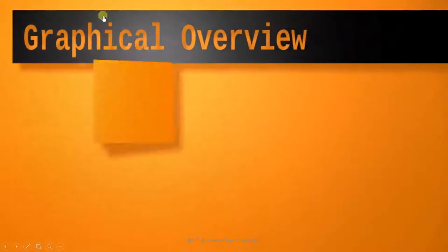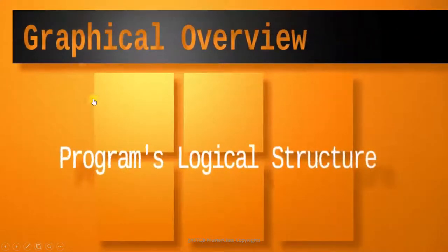Then you will get the graphical overview of the program's logical structure. If it is written in the form of text, sometimes it is very difficult to visualize it. But cause-effect graph will provide you the graphical overview of that logical structure. And if you can visualize by seeing the cause-effect graph, then you can write a better test case.